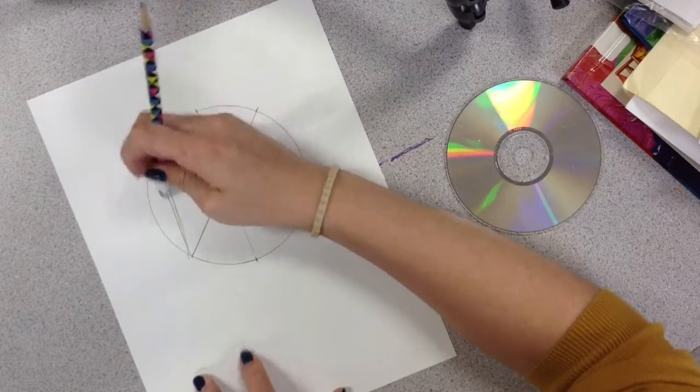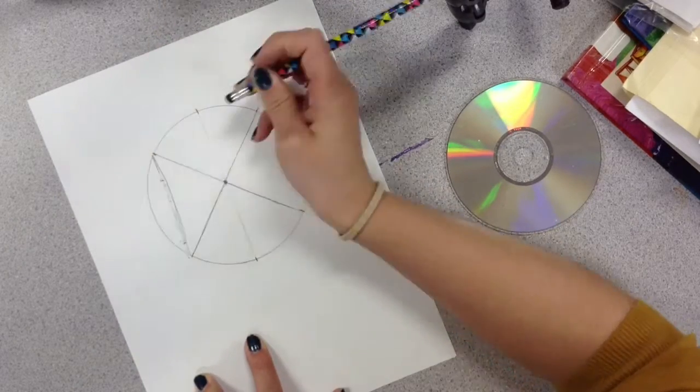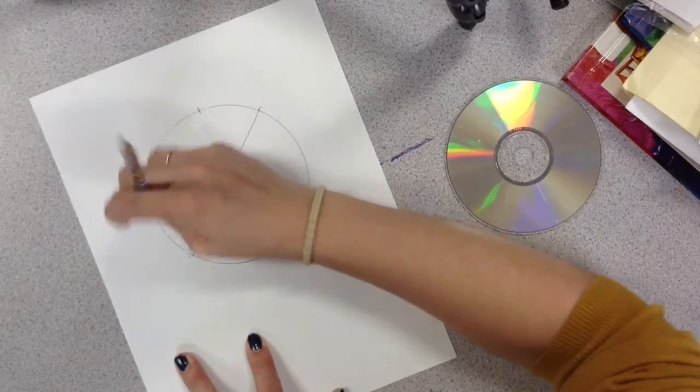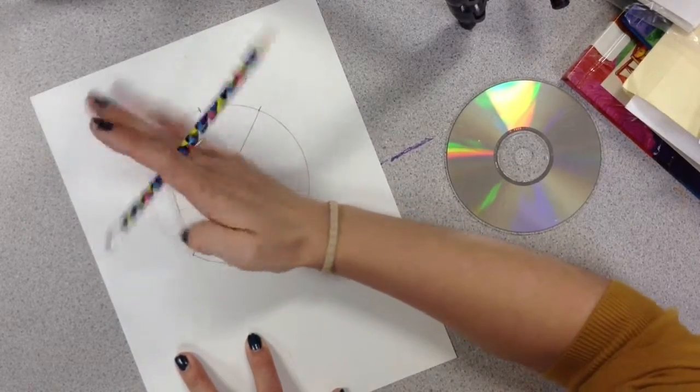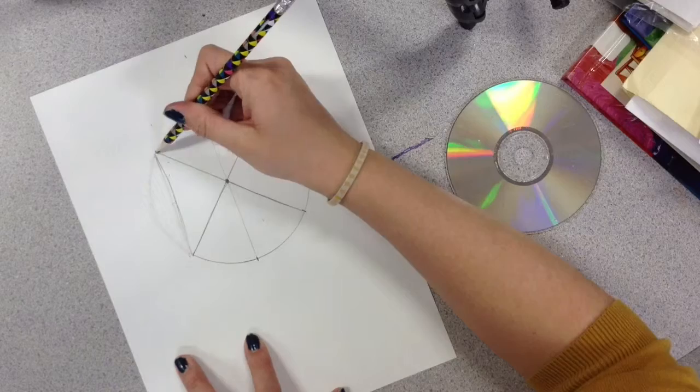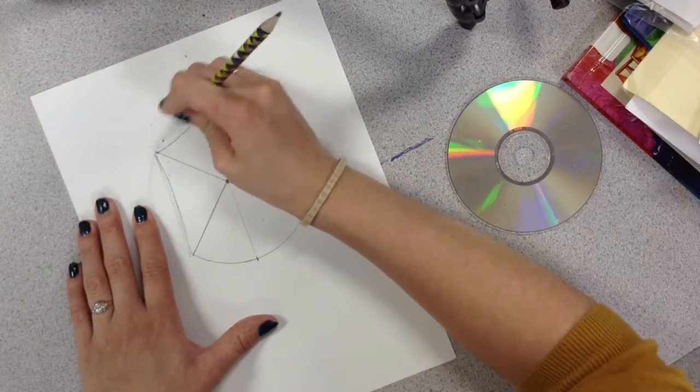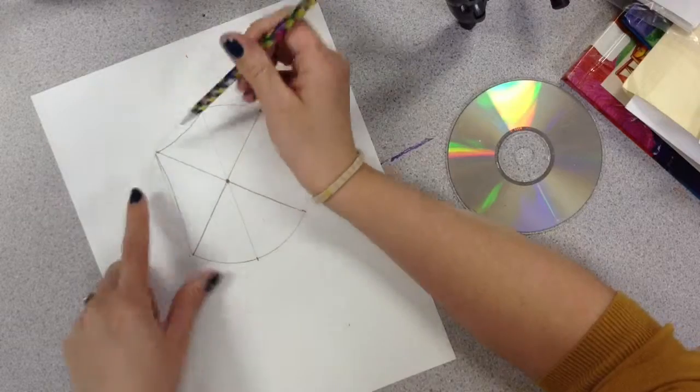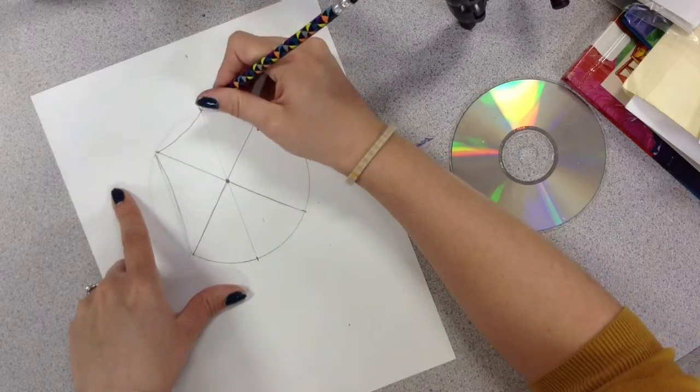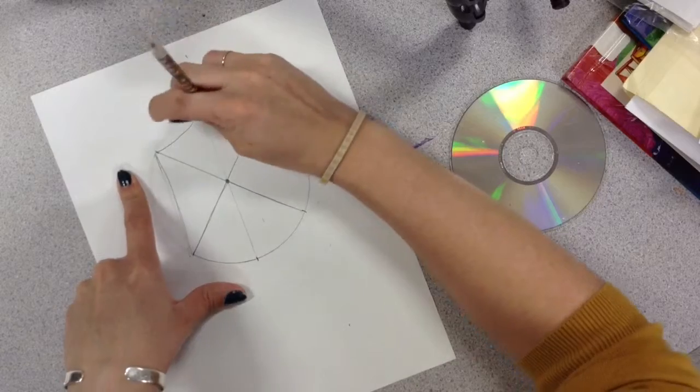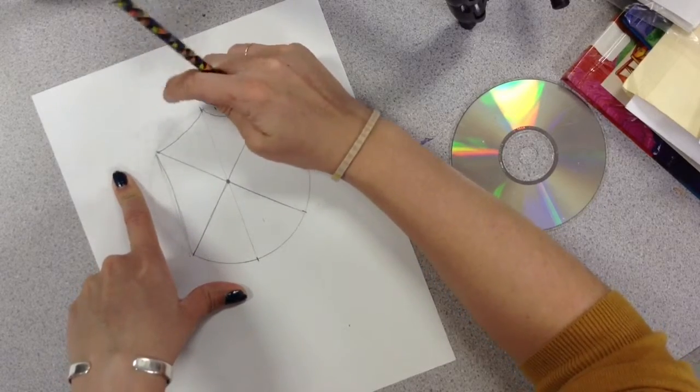If you made a mistake, you can always erase. And once you have your curved line, you're going to erase around the outside edge. And then I want you to do the same up here. And erase that edge of the circle. So you're going from point to point with a curved line.